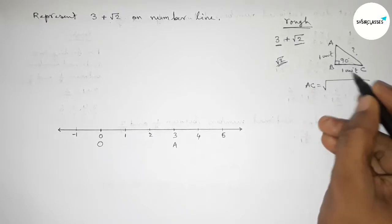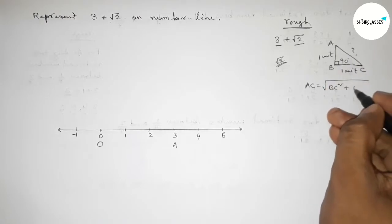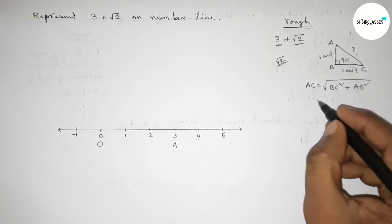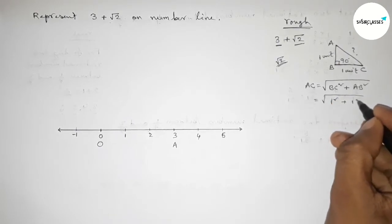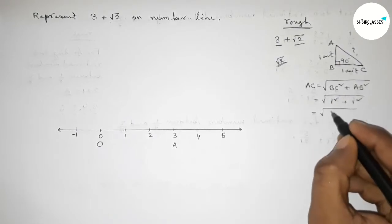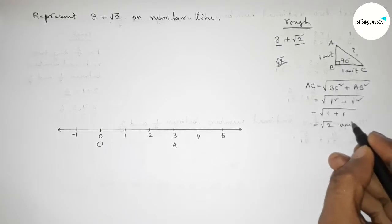By Pythagorean theorem, we can write the hypotenuse AC equals root over base square, so BC square plus perpendicular AB square. Putting the values: 1 square plus 1 square equals 1 plus 1, so this is root 2 unit.